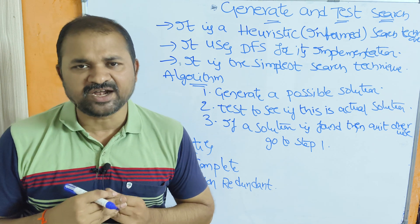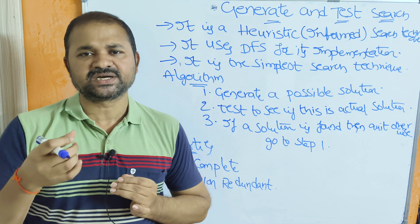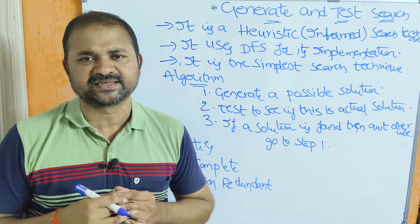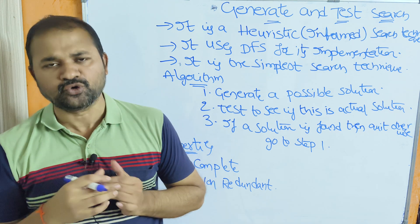That knowledge is nothing but heuristic functions. We know that heuristic functions specify the cost from that node to the goal node.